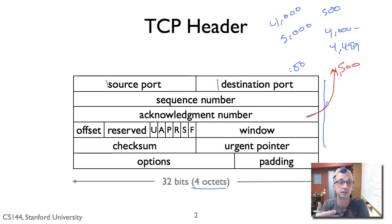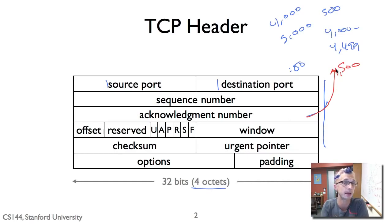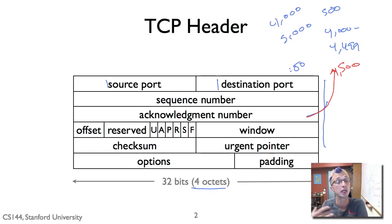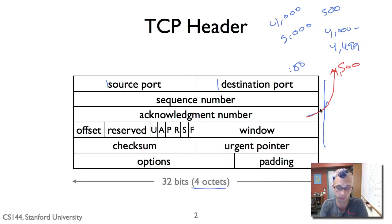When we talk about TCP ACK packets, these are TCP segments that have no data — all they're doing is carrying the acknowledgement number. This happens when traffic is unidirectional: I'm sending lots of data in one direction but there isn't data coming back. If the flow is bidirectional, then acknowledgement numbers are just incorporated into the data segments as they're being sent.